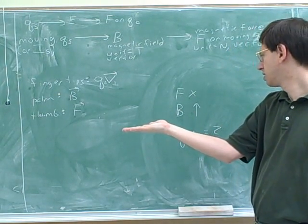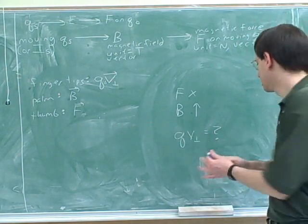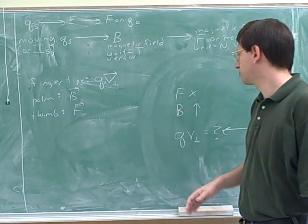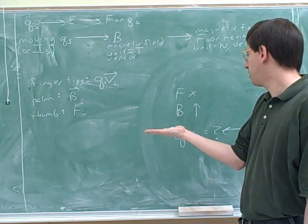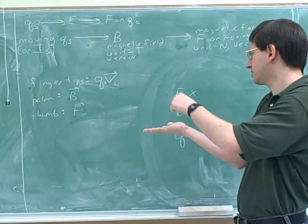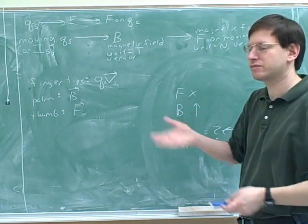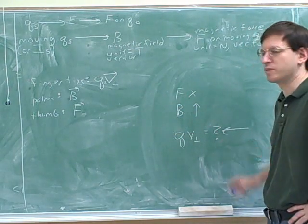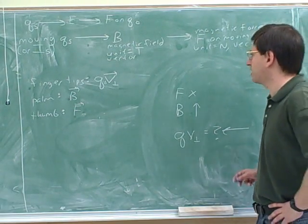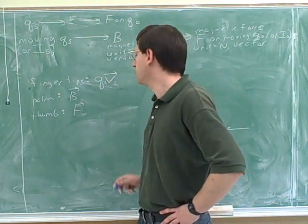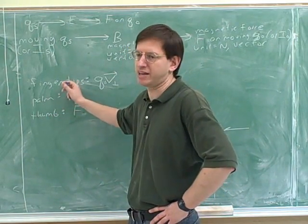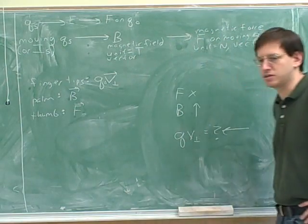So we know that QV points to the left — let's write that down. Thumb for the force pointing into the board, palm for B pointing up. Make sure the thumb is still in the same direction, so the fingertips are now pointing to the left. We should focus on making our palm and thumb point in the right direction, and then the fingertips will automatically tell us what Q times V is going to be.